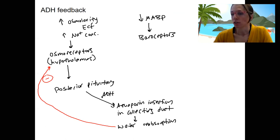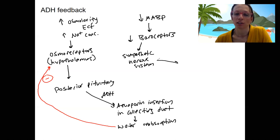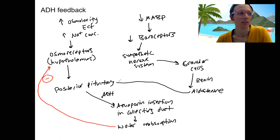Low blood pressure is going to decrease baroreceptor firing. That's going to increase the sympathetic nervous system, which is going to target renin release from the granular cells of the kidney. They're going to release renin, which is going to target angiotensin, and angiotensin targets aldosterone.